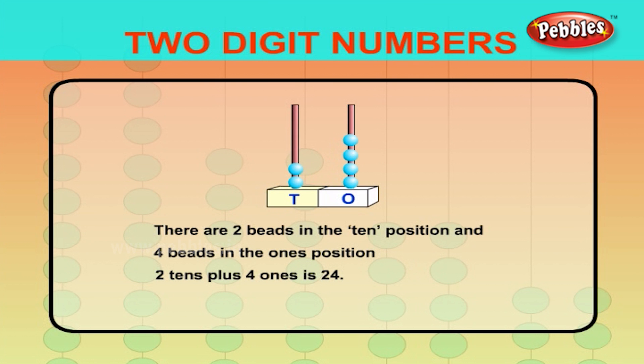In this figure, there are two beads in the 10 position and four beads in the 1s position. Two 10s plus four 1s is 24.